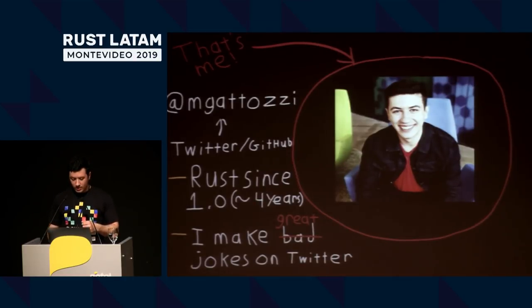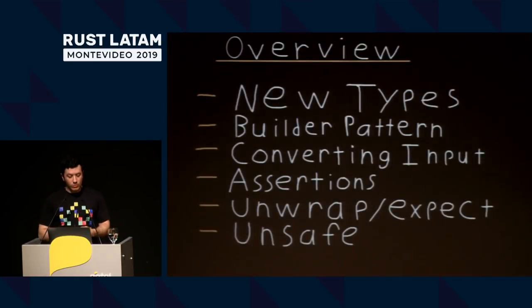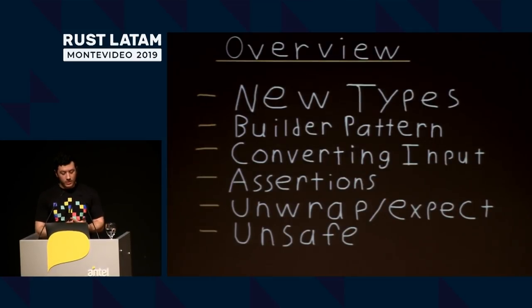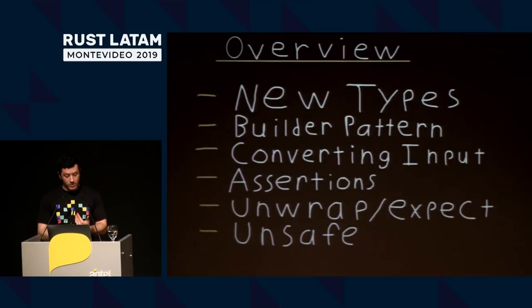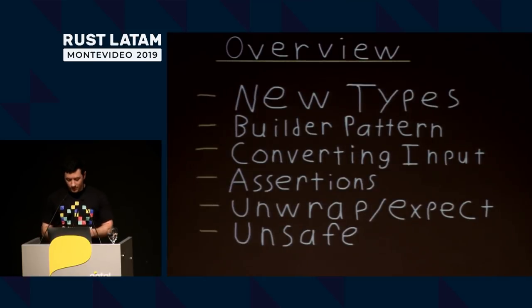Let's go over what we're going to cover today. We're going to cover what's known as new types, as well as what the builder pattern is, dealing with converting input, insert assertions, what to do when you unwrap and expect, as well as a little bit of unsafe guidelines when you're running your code.